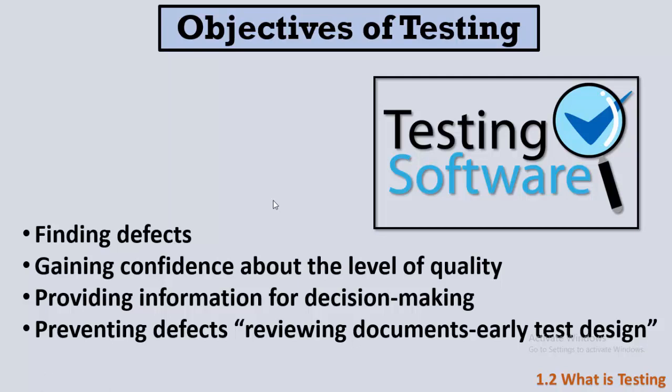The second objective of testing is to gain confidence about the level of quality. I want to be sure that my software is good enough, so I give it to the tester to confirm it has a good level of quality. The third reason for testing is to provide information for decision making — as a tester, you tell stakeholders whether you are ready to release or not.